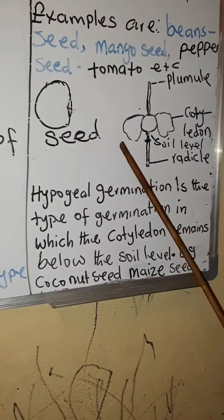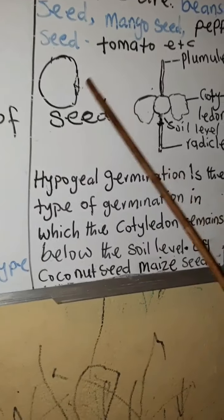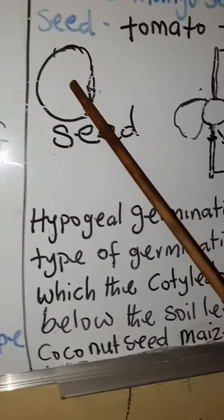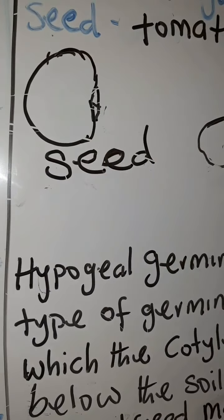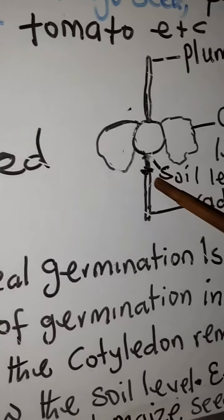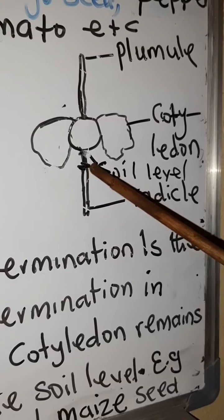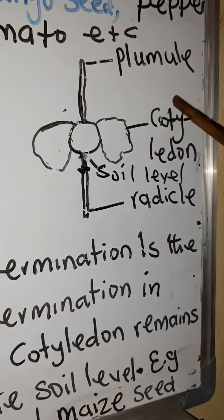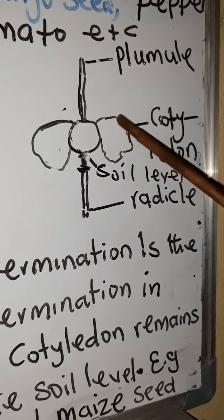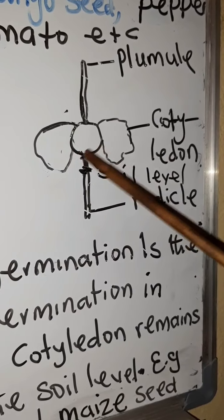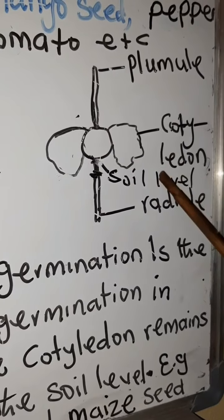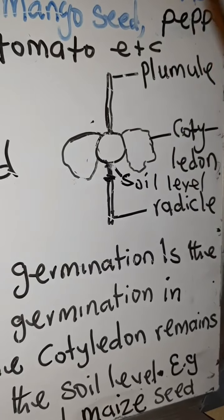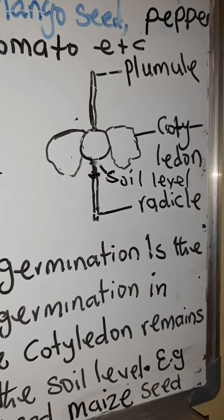Look at the drawing. This is a bean seed — you are familiar with beans. It has been planted into the soil. This is the soil level, and this is what is called the cotyledon. The seed breaks into two parts and then you have the plumule, which is up.